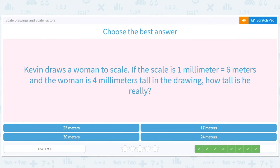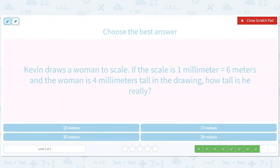Kevin draws a woman to scale. If the scale is one millimeter equals six meters. And the woman is four millimeters tall in the drawing. How tall is she really? So it's times six. So it should be times six. So it should be 24 meters. Now that is, that's a dinosaur. Like that's literally like 80 feet tall. So this woman is a dinosaur. I'm just checking. Times six is 24 meters. So the answer is 24 meters.